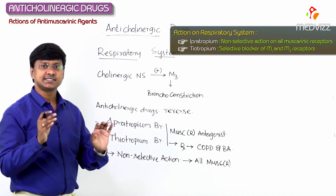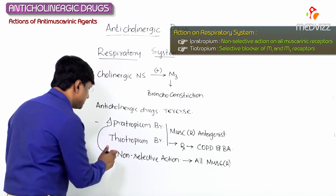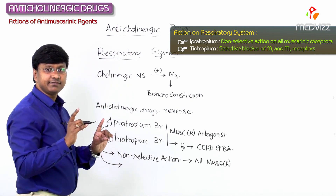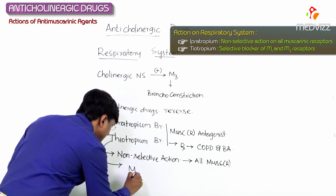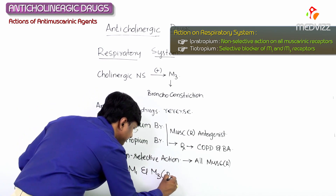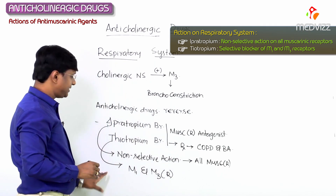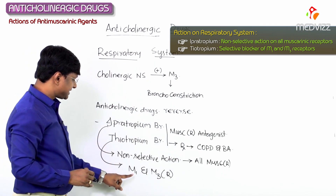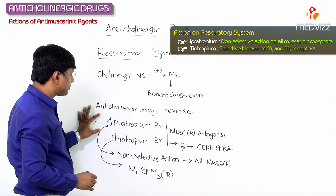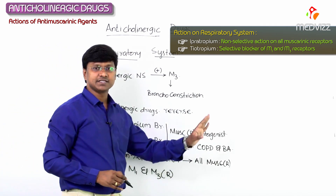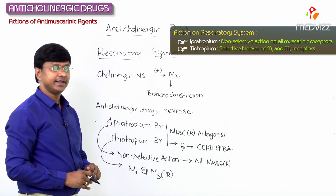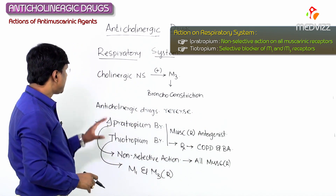Whereas tiotropium bromide has somewhat selective blocking action. Tiotropium bromide will selectively block M1 and M3 receptors. Ipratropium bromide blocks all the muscarinic receptors — it has non-selective action.